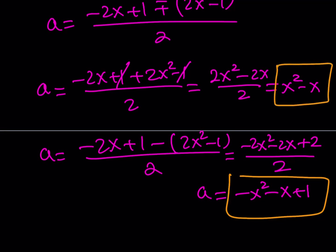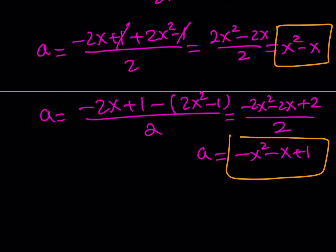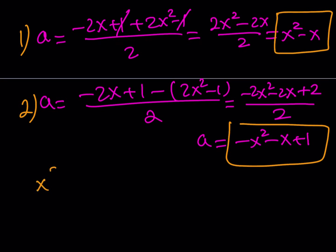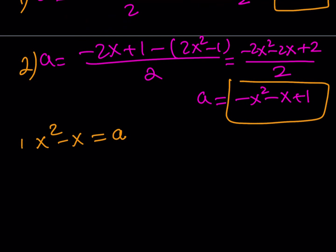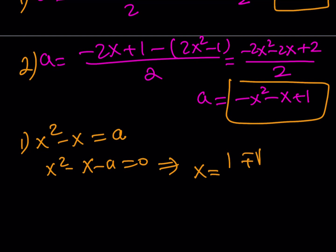Since we found a in terms of x, we can switch roles and write each as a quadratic in x. From the first: x squared minus x minus a equals 0. Solving with the quadratic formula: x equals (1 plus or minus the square root of 1 plus 4a) all over 2.